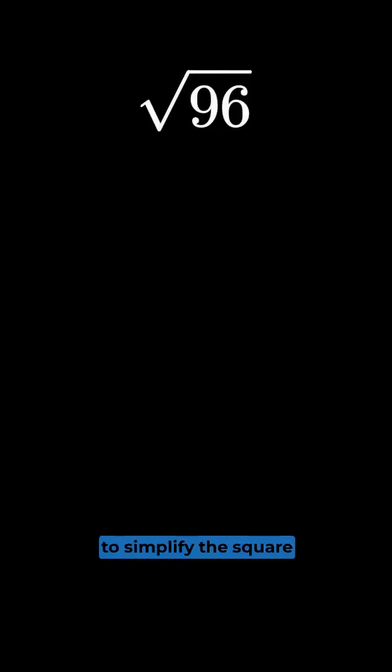Let's simplify the square root of 96. So to simplify the square root of 96, you want to break down 96 into its prime factors.